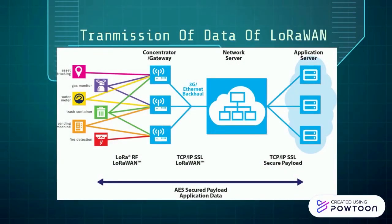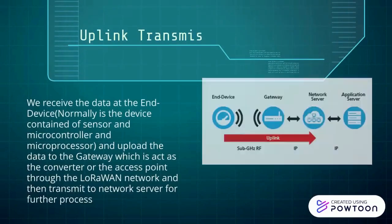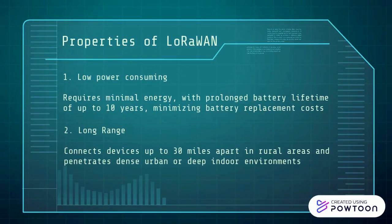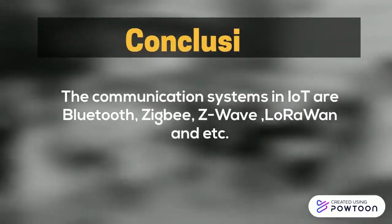This is the data transmission of LoRa. Data is received at the end device and uploaded to the gateway, which has a converter or access point through the LoRa link, and then transmitted to the network server for further processing. LoRa is low power-consuming, requiring minimal energy with a battery lifetime of up to 10 years, minimizing battery replacement costs. It can achieve a long range of connection, connecting devices up to 30 miles apart in rural areas and penetrating dense urban or deep indoor environments.